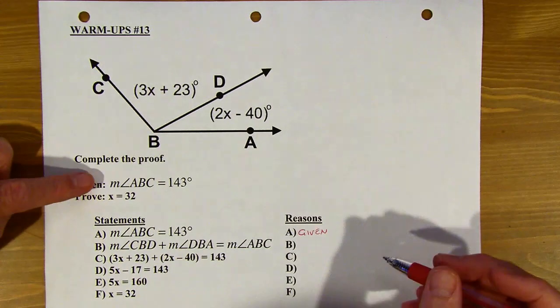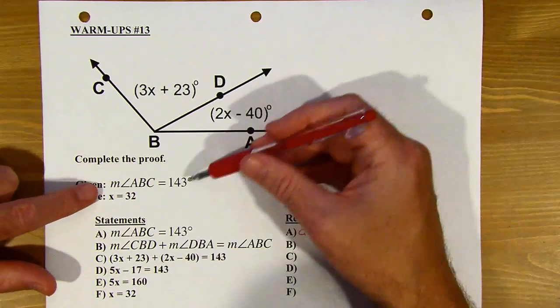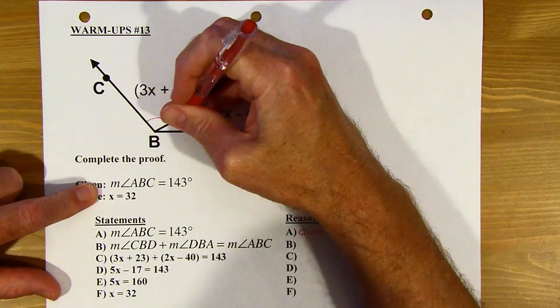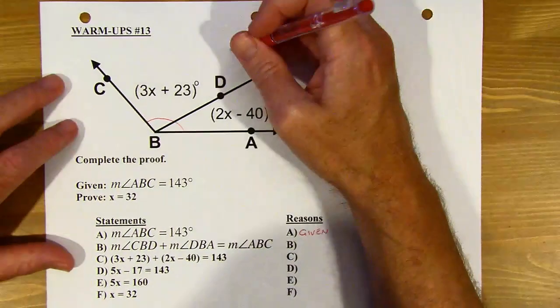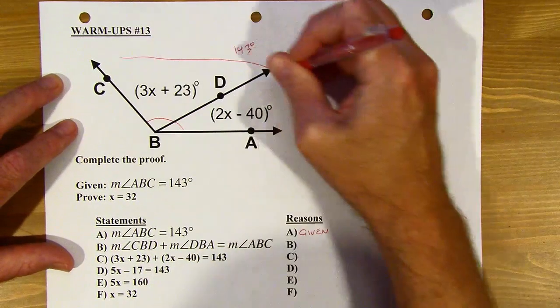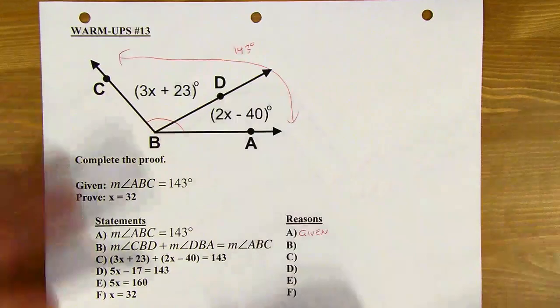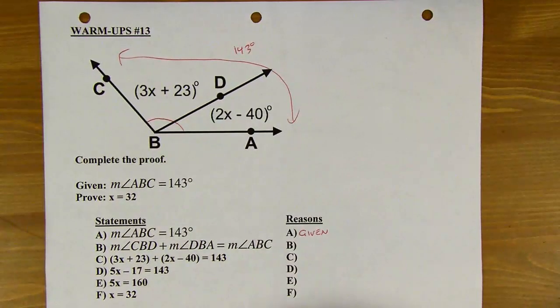All right. So ABC, let's think about that angle. ABC is the big angle. So I kind of like to put this info into the picture as I go. So that given info, 143 degrees is that big angle. Okay. So now I've got it there.